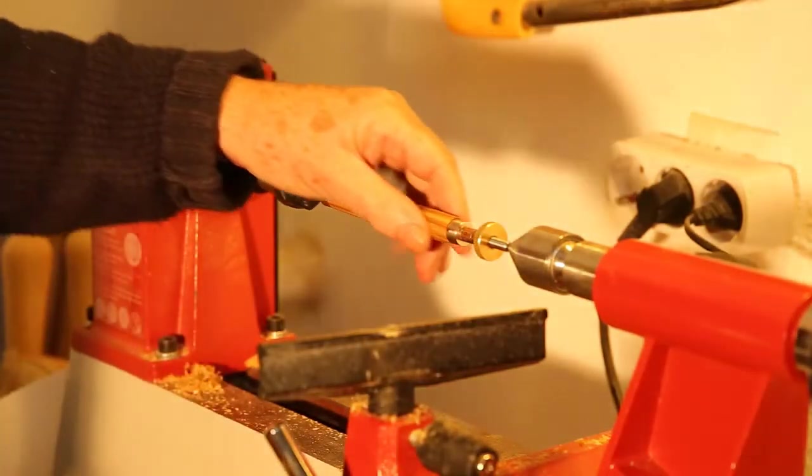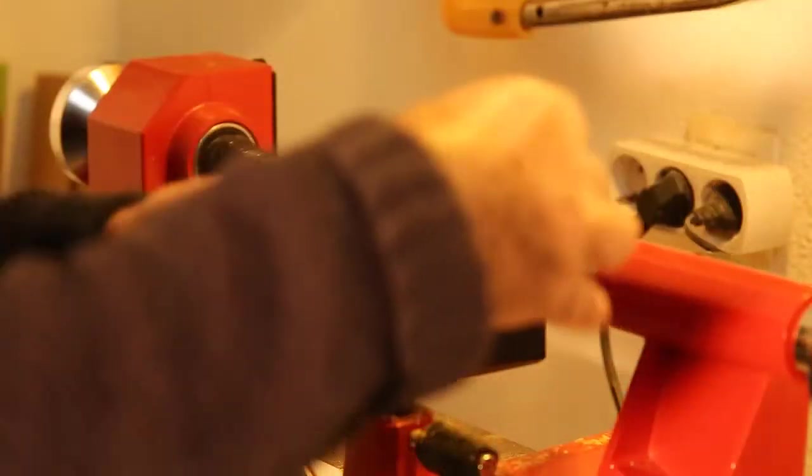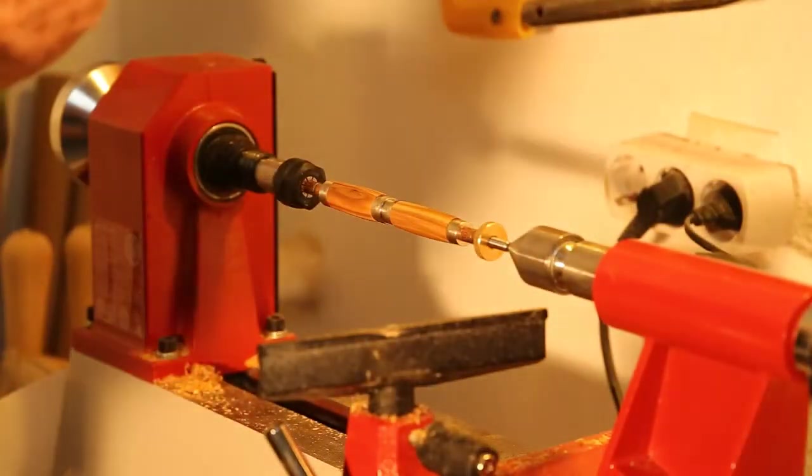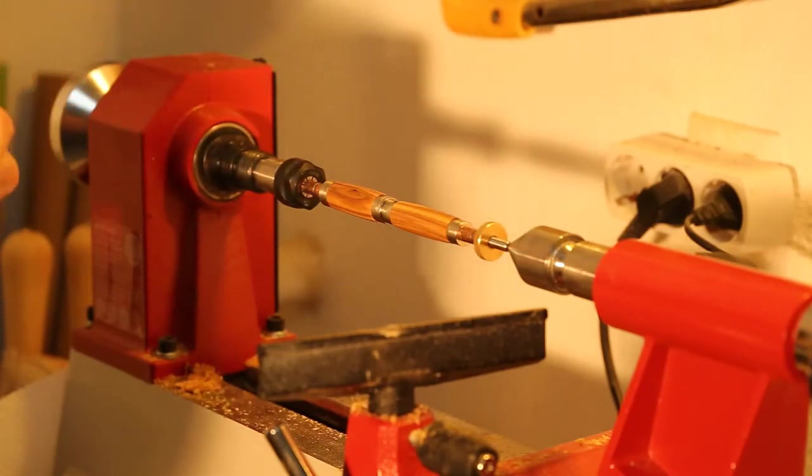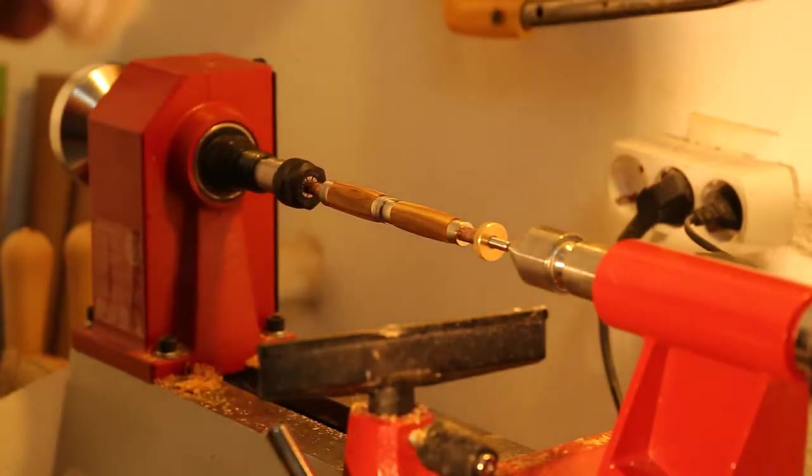Now that it's been sealed, it's time to put on the super glue finish. Super glue is also known as CA glue. I'm going to put on seven thin coats, and at the very last coat, I will sand it again.